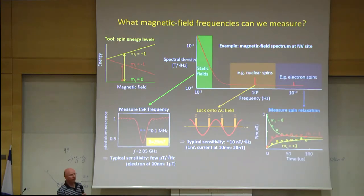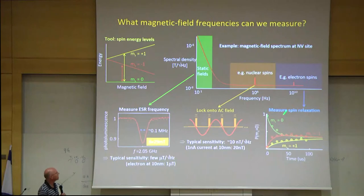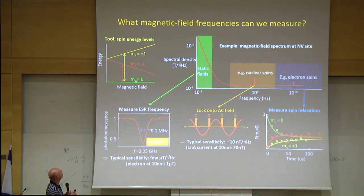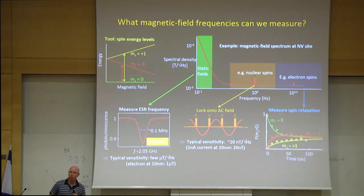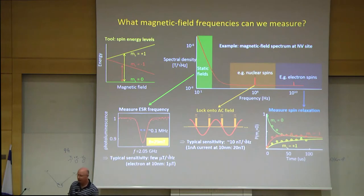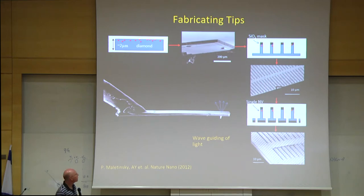Beyond that, if interested in even higher-frequency fluctuations, one uses a slightly different mode: relaxation. You prepare the atomic-like structure in one of its states, wait some time, and if there are fluctuations at a frequency separating any two states, transitions and relaxation are induced. By following the relaxation rate, you can say something about the magnitude of fluctuations in the system, with very high magnetic field sensitivity.